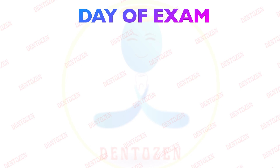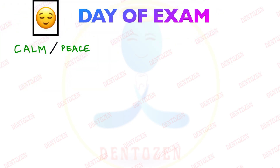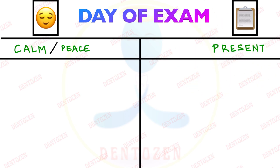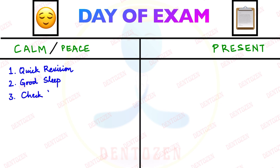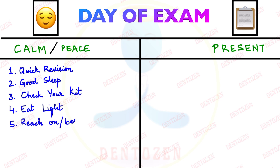Now for the day of exam: if you have already prepared well and done step one, you have done 90% of your work. You can relax and present your paper with a clear mind. For a peaceful mind, do a quick revision the day before — don't go into details, just give everything a quick read. Take good rest so you can think clearly. Check your kit for all stationery including H&E pencils, which are a must for histology diagrams. Eat light on exam day, and try to reach the exam hall before time.